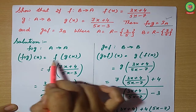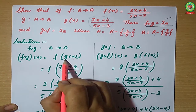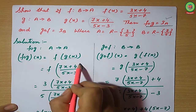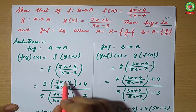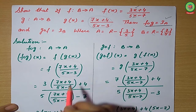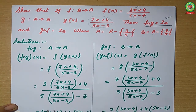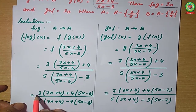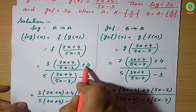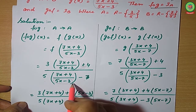fog of x equals f(g(x)). We substitute g(x) = (7x+4)/(5x−3) into f. So fog(x) = [3·(7x+4)/(5x−3) + 4] / [5·(7x+4)/(5x−3) − 7]. Taking LCM, it becomes [3(7x+4) + 4(5x−3)] / [5(7x+4) − 7(5x−3)], which simplifies by cross multiplication.